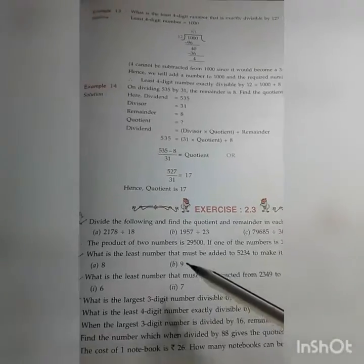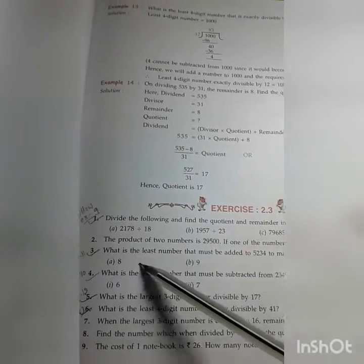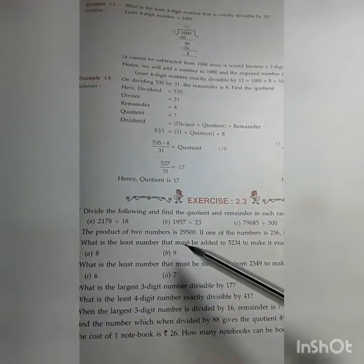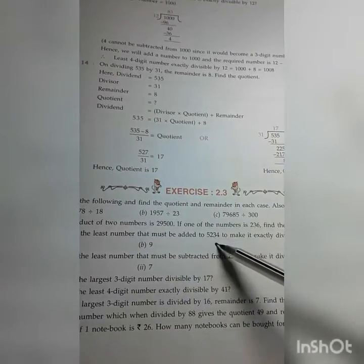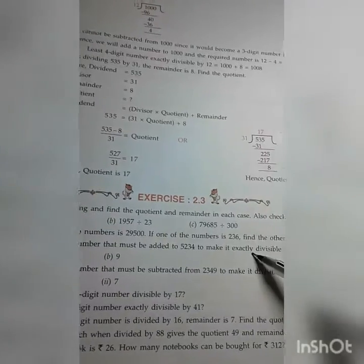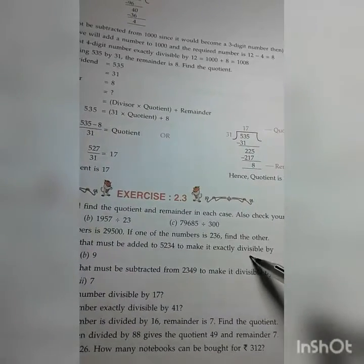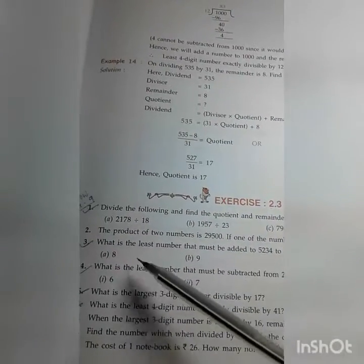Then comes to number three. What is the least number that must be added to 5234 to make it exactly divisible by 8 and 9.